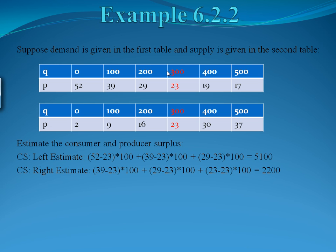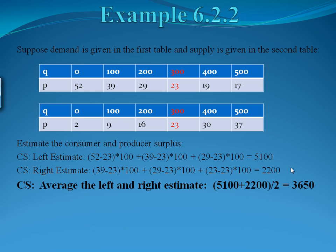We also want to do a right-hand estimate. For the first 100 units, we now pick the price on the right, which is 39, subtract off the equilibrium price of 23, and multiply by 100. From 100 to 200 units, we pick the price on the right, which is 29, subtract off our equilibrium price of 23, and multiply by 100. From 200 to 300 units, we pick the price on the right, which is 23, subtract 23, and multiply by 100, giving a contribution of zero. We get a total right-hand estimate of 2,200. We average the left and right estimates: 5,100 plus 2,200 divided by 2, giving us our best estimate of consumer surplus as 3,650. We only look from 0 up to the equilibrium point, so we don't need to use the 400 and 500 rows on this table.